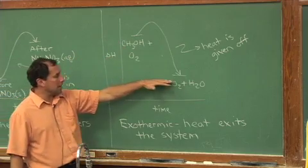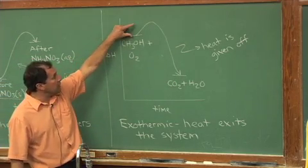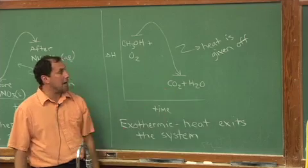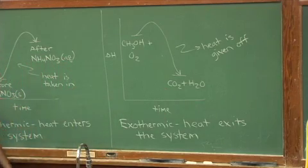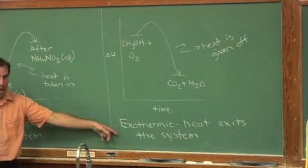We start off high, we end down low. There's a little bit of an activation energy at the beginning, that hump, that we have to get over. Heat is given off in this process. Exiting heat, exothermic.